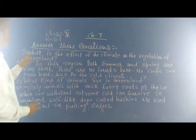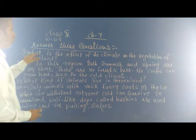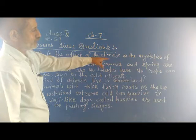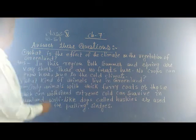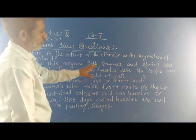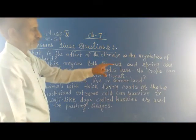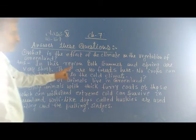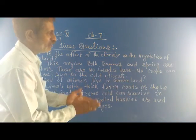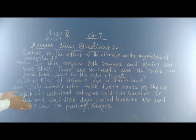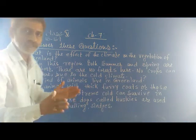Question number 1: What is the effect of the climate on the vegetation of Greenland? Answer: In this region, the soil is very soft. There are no forests and no crops grow here due to the cold climate.